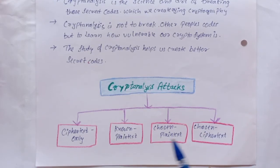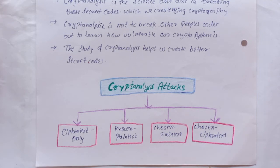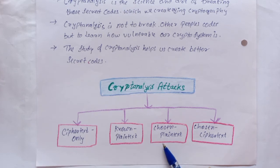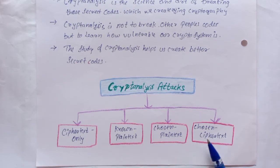There are four types of cryptoanalysis attacks. First is ciphertext only, next is known plaintext, next is chosen plaintext, and next is chosen ciphertext.